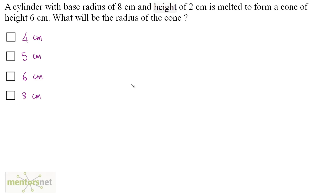A cylinder with base radius 8 centimeters and height 2 centimeters is melted to form a cone of height 6 centimeters. What will be the radius of the cone? Since the cylinder is melted to form a complete cone, the volume of the cylinder equals the volume of the cone.